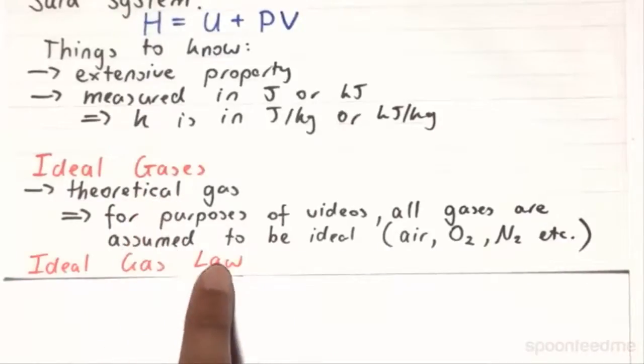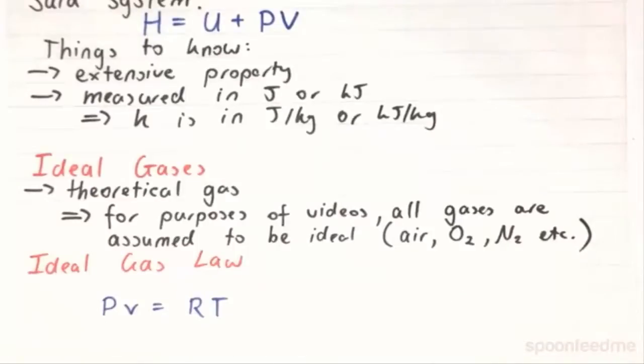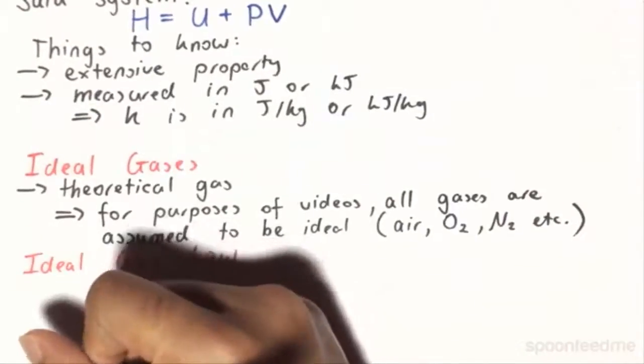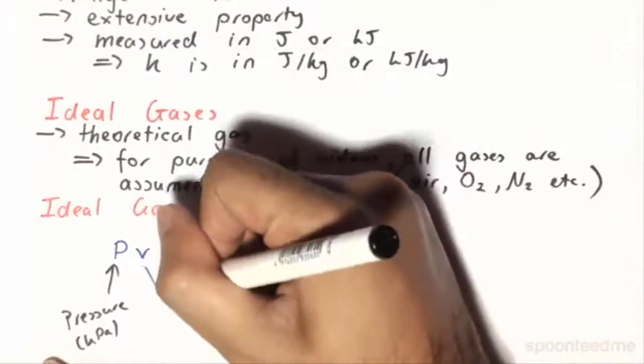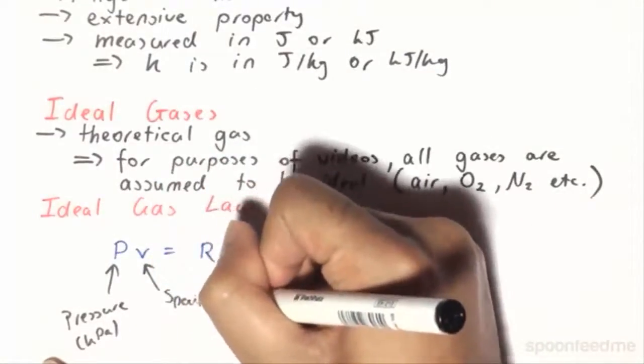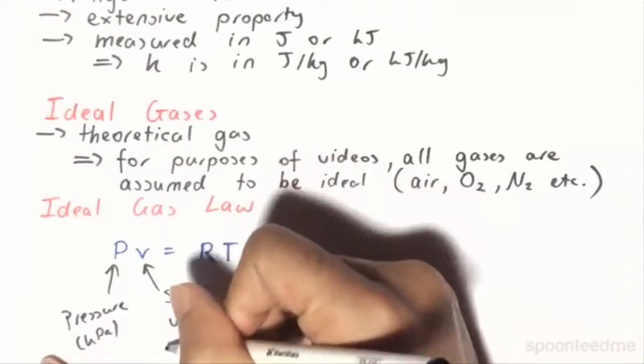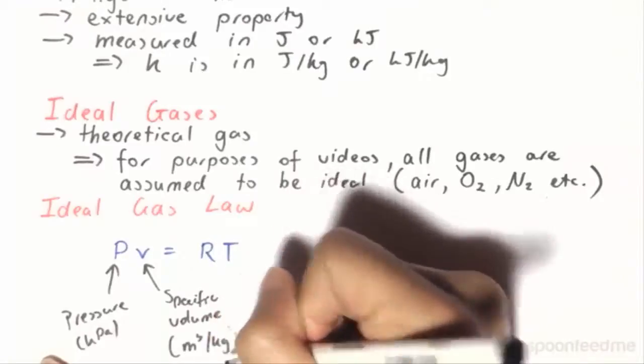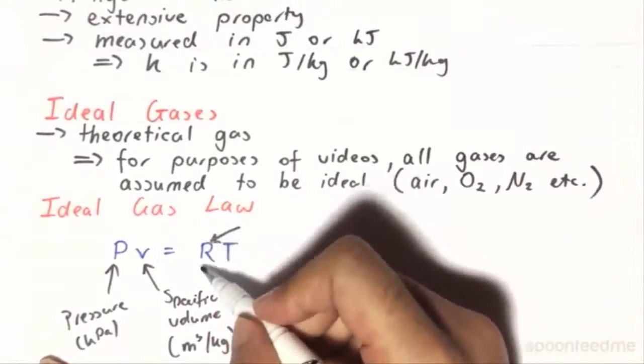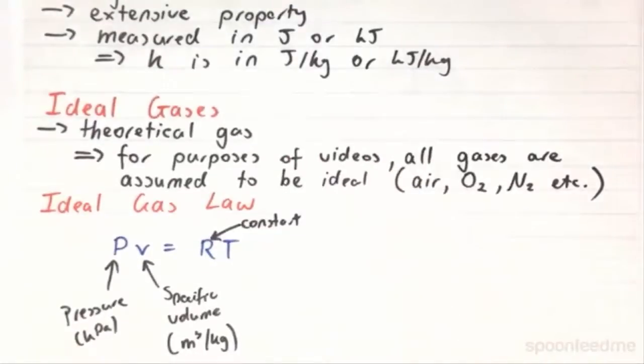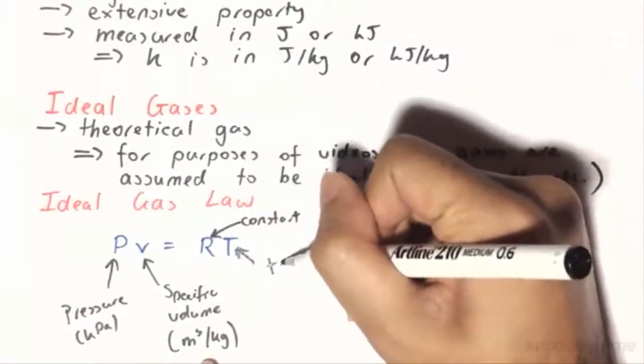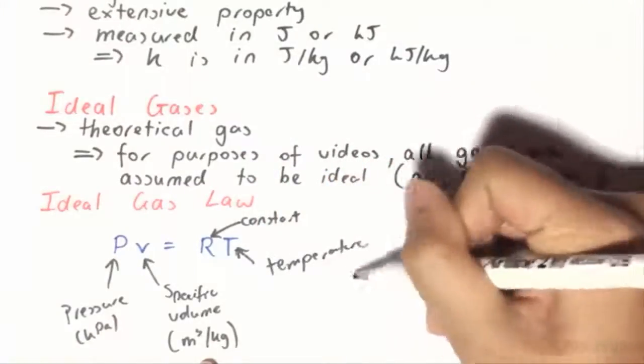So with ideal gases, there is a law that relates the ideal gases' pressure, volume, and temperature. And that is that PV is equal to RT. So we have P here is the pressure, which is commonly in kilopascals. V here is the specific volume in meters cubed per kilogram. The R constant here is called the gas constant for each R, since it is a different value for different ideal gases. And finally, we have the temperature over here, which is in Kelvin.